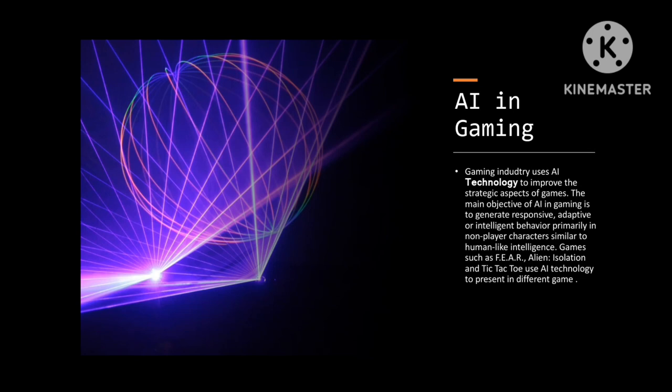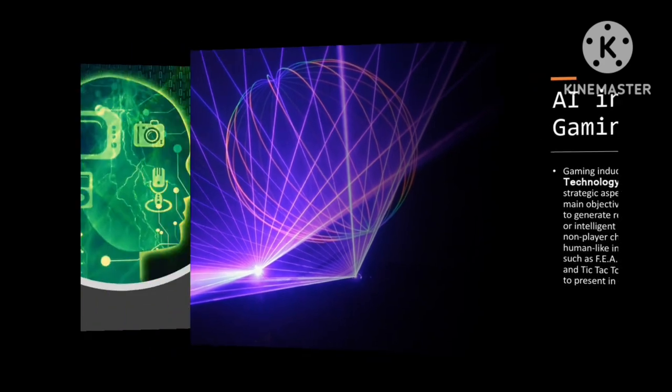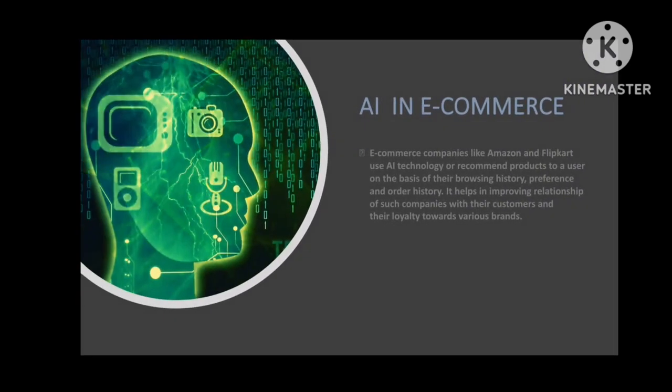The main objective of AI in gaming is to generate responsive, adaptive, or intelligent behavior primarily in non-player characters, similar to human-like intelligence. Games such as F.A., Alien, and Tic-Tac-Toe use AI technology. The second application is AI in e-commerce. Companies like Amazon and Flipkart use AI technology to recommend products to users based on their browsing history and order history, helping to improve customer relationships and loyalty towards brands.